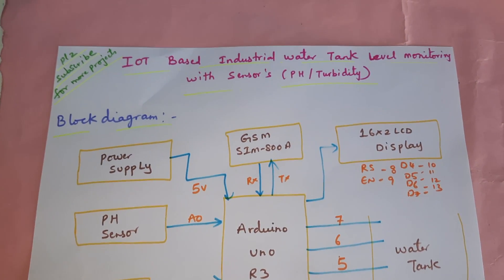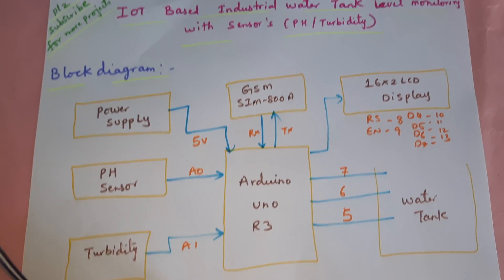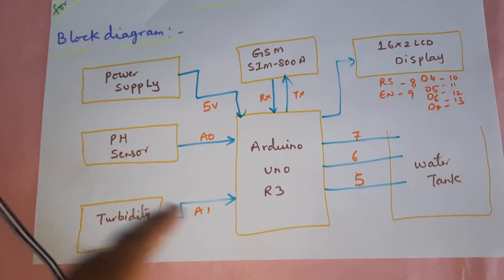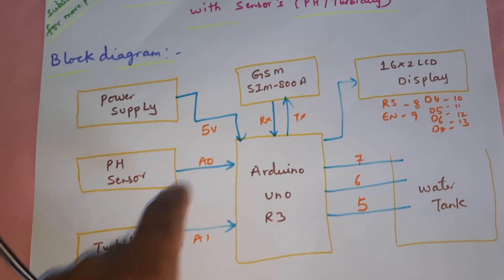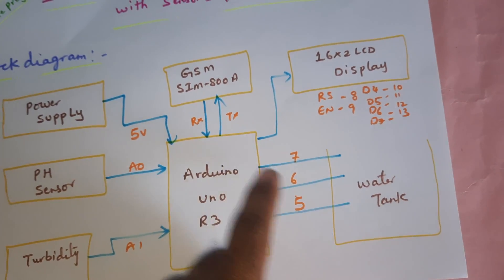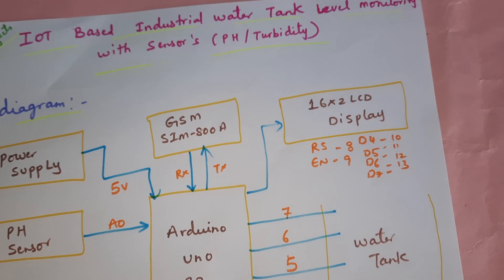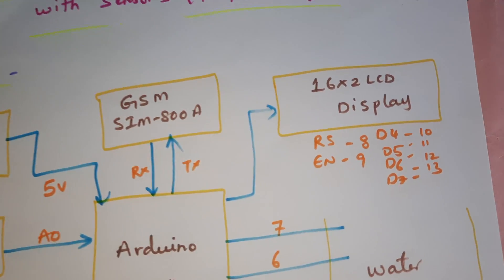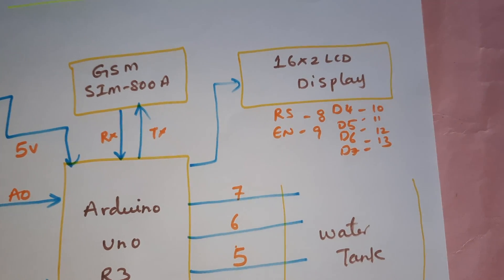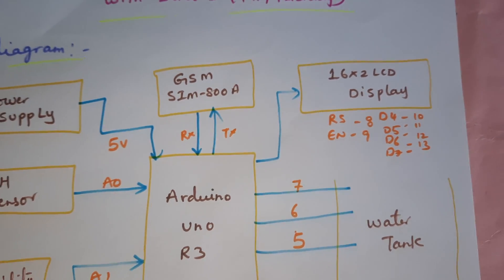IoT based industrial water tank level with sensors monitoring. We are using Arduino Uno R3, pH sensor, turbidity sensor — those are connected to A0 and A1. Water level tank pins 7, 6, 5, 4 for level 0, level 1, level 2. The 16x2 LCD display is connected to RS, enable, D4, D5, D6, D7 on pins 8, 9, 10, 11, 12, 13. The GSM modem is connected with RX/TX on pins 0 and 1.